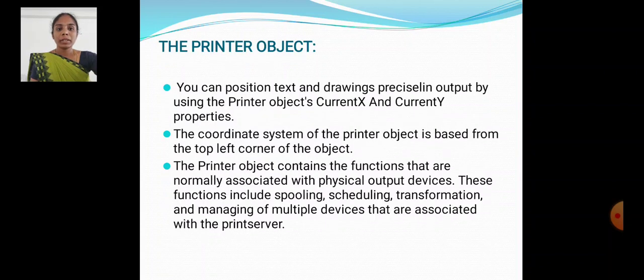The printer object. You can position text and drawings, precise line output by using the printer object's CurrentX and CurrentY properties. The coordinate system of the printer object is based from the top left corner of the object.